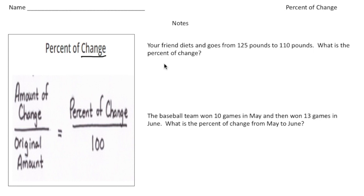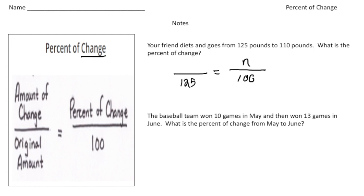Let's dive right into a problem. It says your friend diets and the weight goes from 125 pounds to 110 pounds — what is the percent of change? Let's set up our proportion. The 100 always goes in the bottom right corner, and we're trying to figure out the percent, so that's the unknown — we'll use n. Your friend started at 125 pounds, so 125 is the original amount. Going from 125 to 110 is a drop of 15 pounds, so 15 goes where the amount of change is.